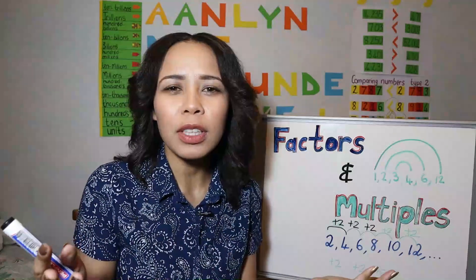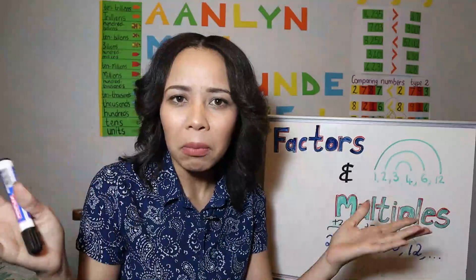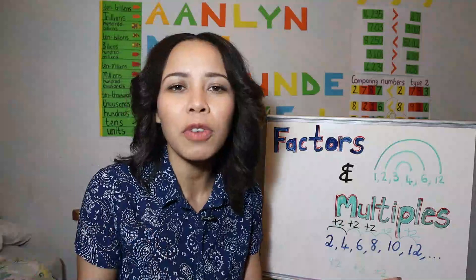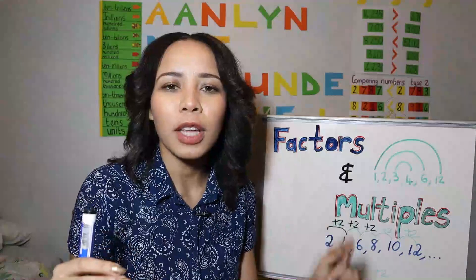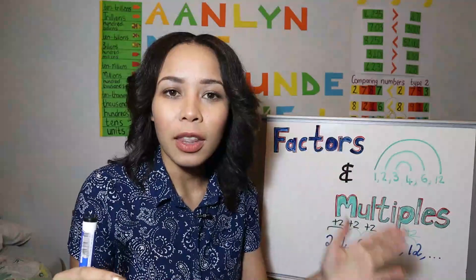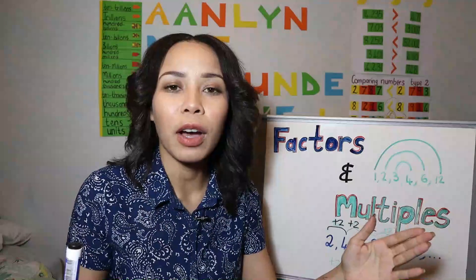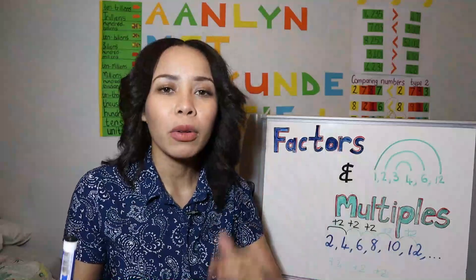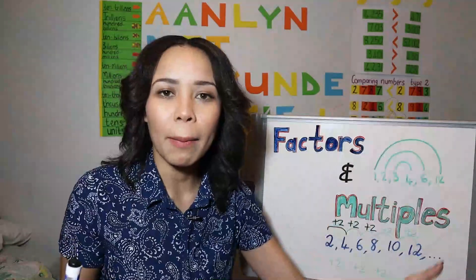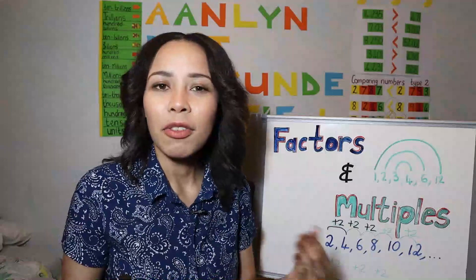Another way to think of it is you count in that number. Some people say count in fives — it will be 5, 10, 15, 20. Those are the multiples of 5. You kept on adding 5 to get multiples of the same number.